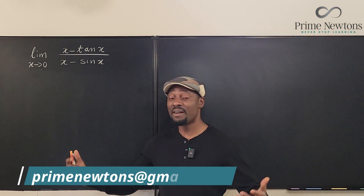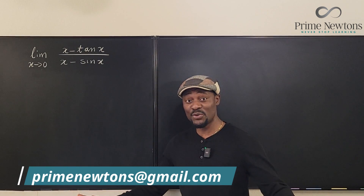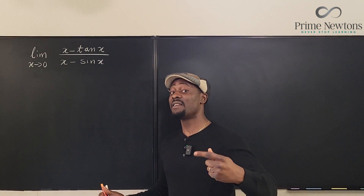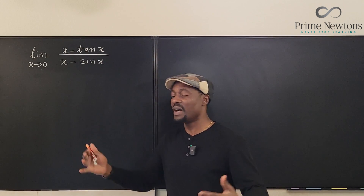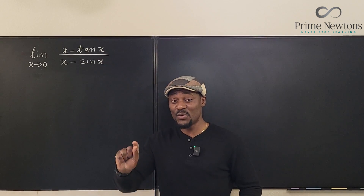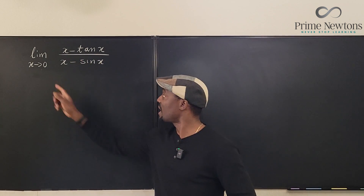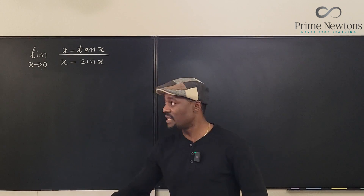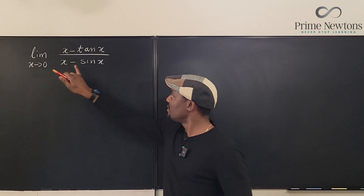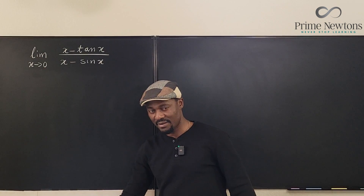Welcome to another video. We have a limit problem here that requires nothing special — all you have to do is what you would do to any other limit problem. However, if you use the wrong strategy things get very complicated. Remember: every time you get a limit problem, the first thing you do is plug it in, unless any part of the function is not continuous at the target point. By the rule of continuity, x is a polynomial and it's continuous at zero, this trig function is continuous at zero, so you have the right to plug in anything you see here.